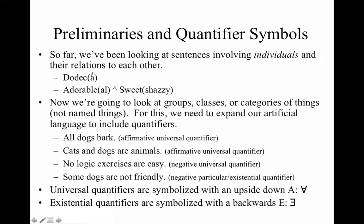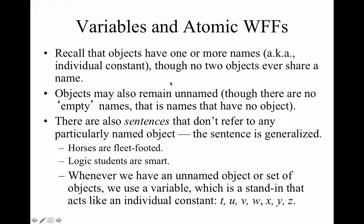We're going to preserve our predicates, whether single place or multiple place, but we're going to substitute for names something else. Because in quantifier logic we don't use names — we don't get to that level of specificity. So we're going to replace names with variables. Think of your variable as a placeholder. The individual constant, which names an entity specifically, is replaced in the quantified sentence with a variable.